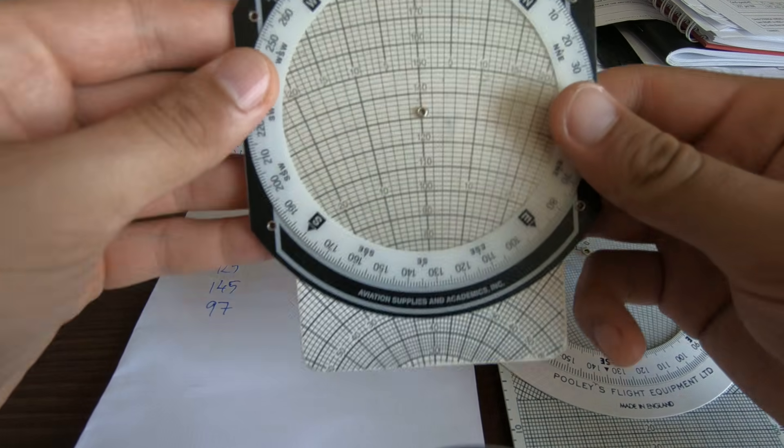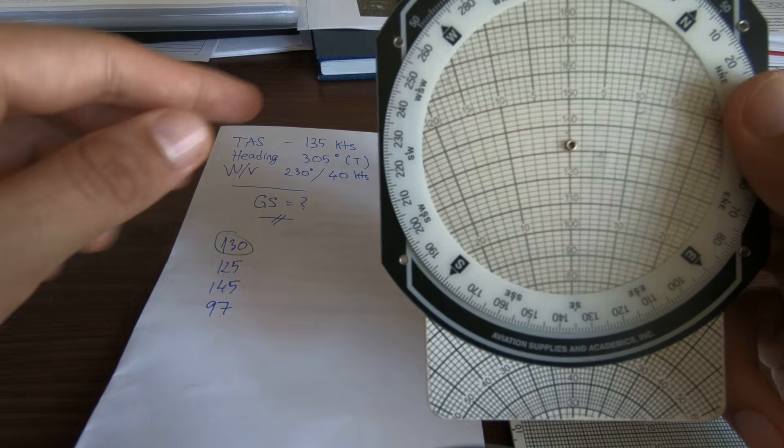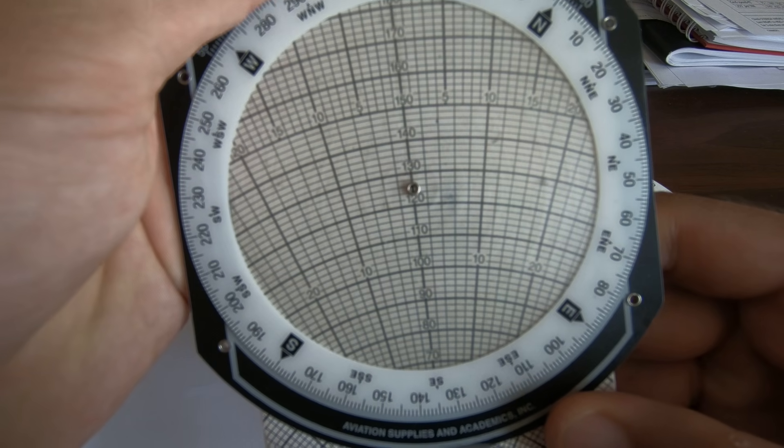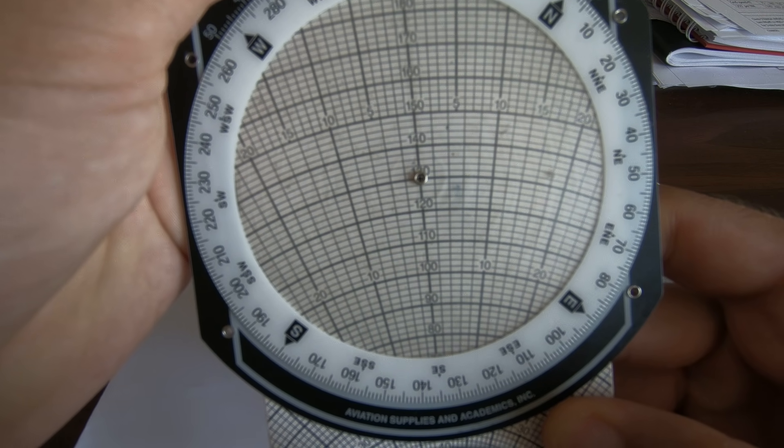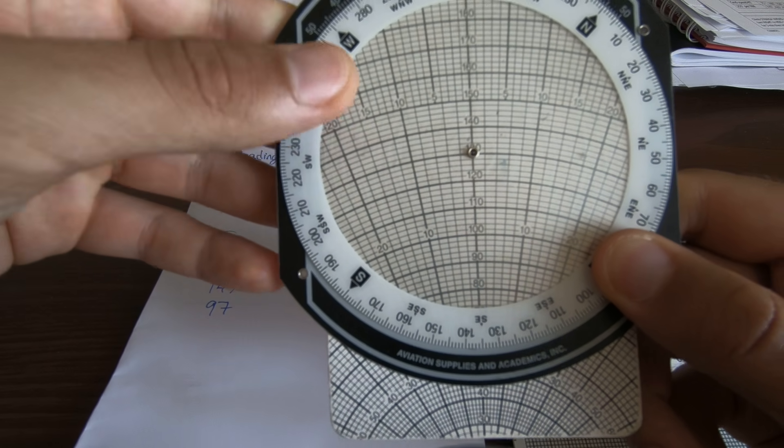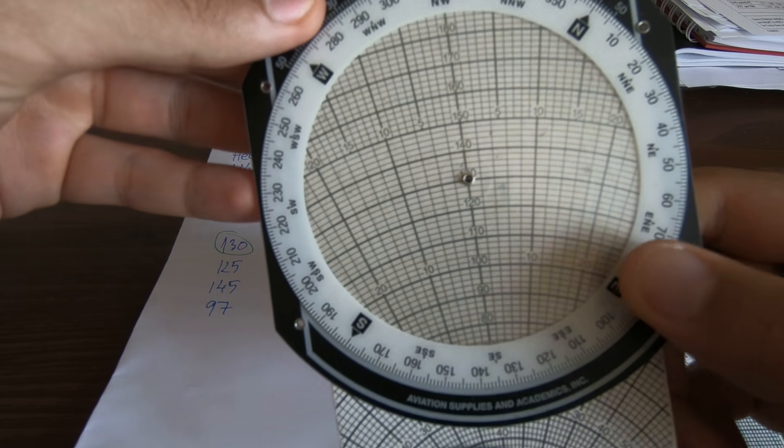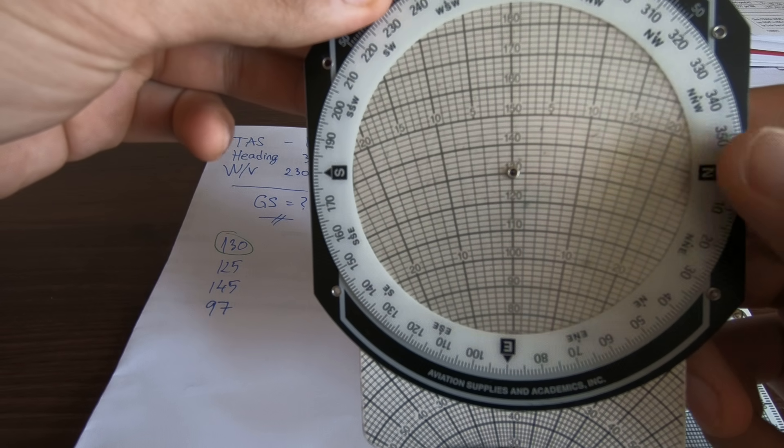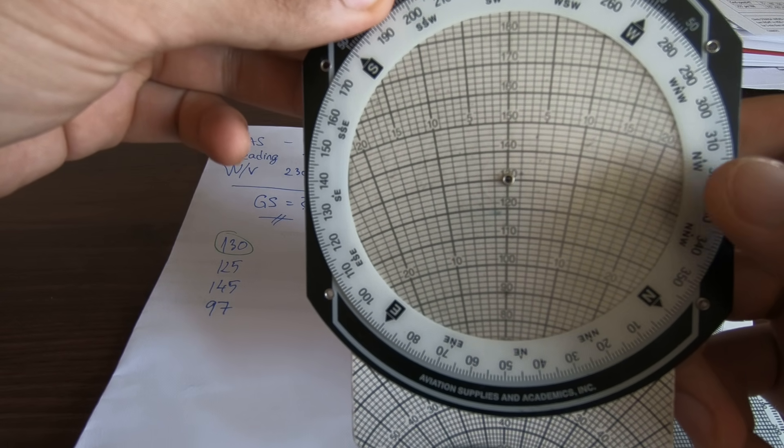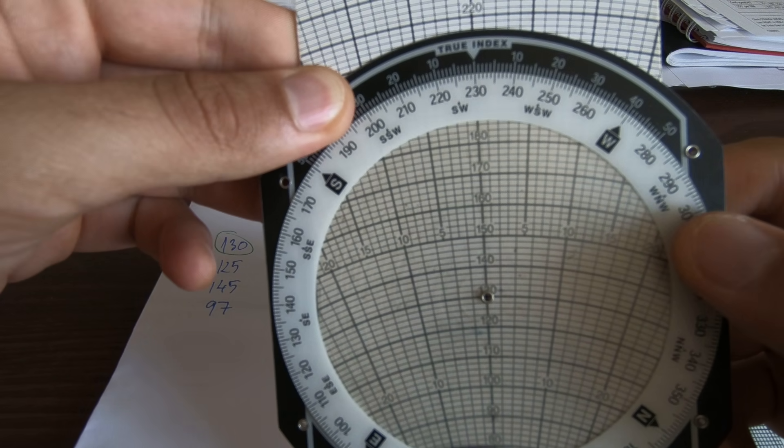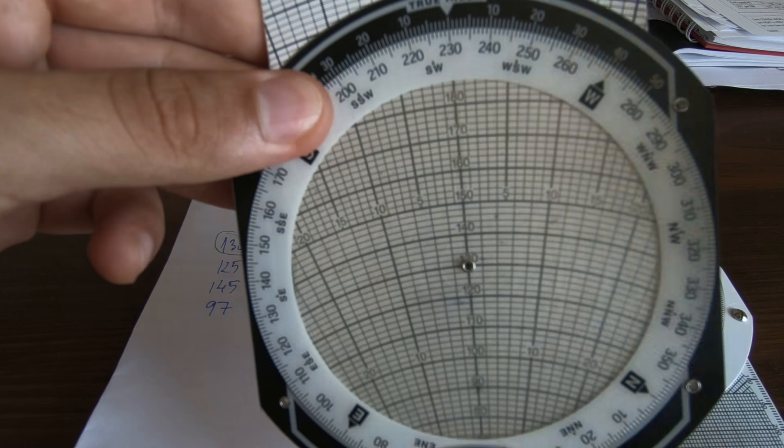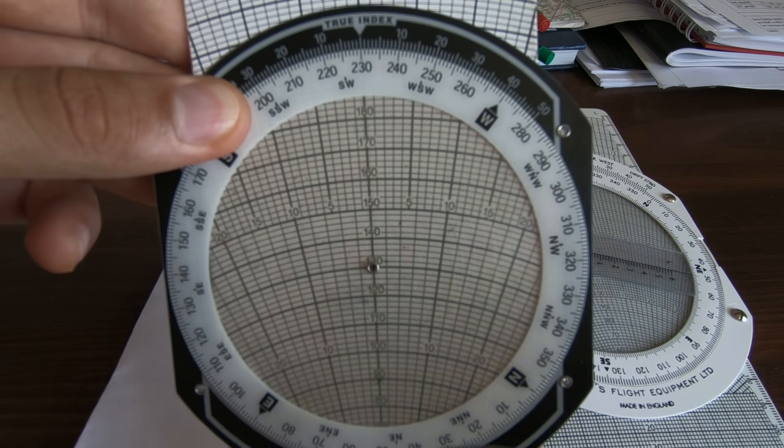Let's use the E6B as well. So true airspeed was 130, we just put 130 here in the middle, there we go. Here we don't have a wind arm so we have to set first the wind direction which is 230. Sorry about that, so wind direction is here, and then we have to make a mark.